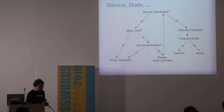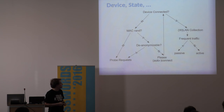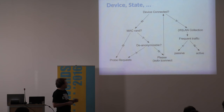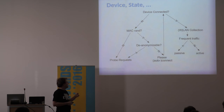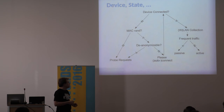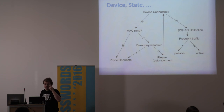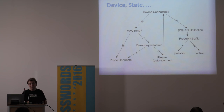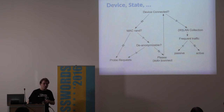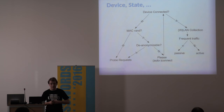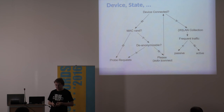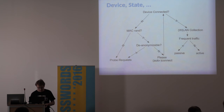If we can't de-anonymize the MAC randomization, the simple solution is to ask users to connect to the Wi-Fi. Most users use Wi-Fi anyway by default and auto-connect because you get much faster data rates and it does not count against your monthly limit.